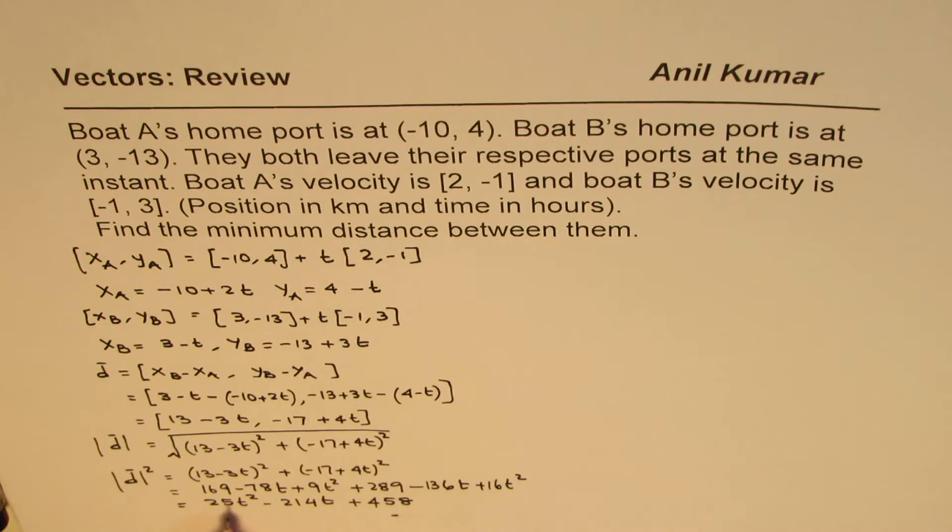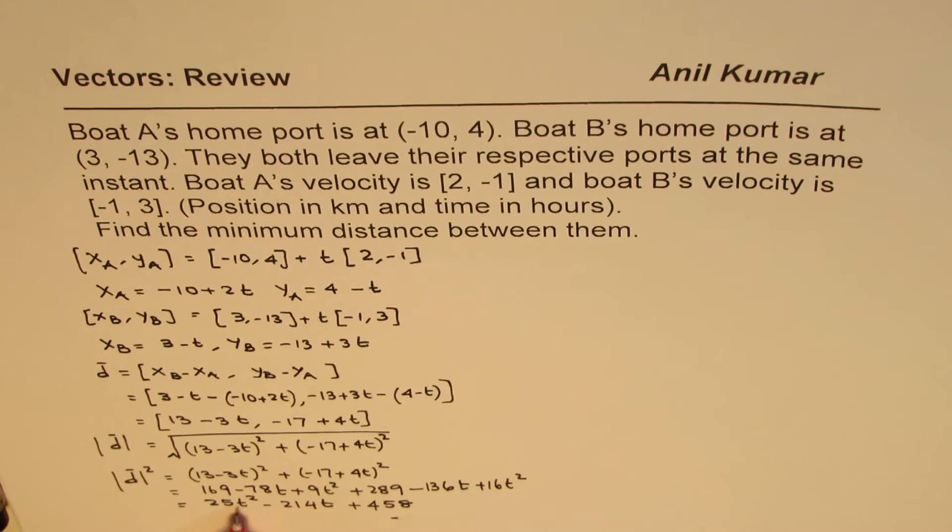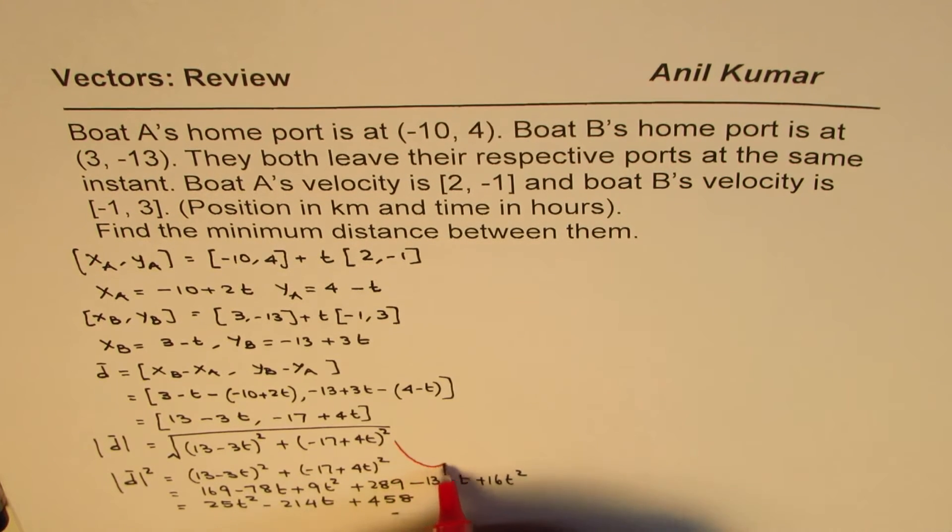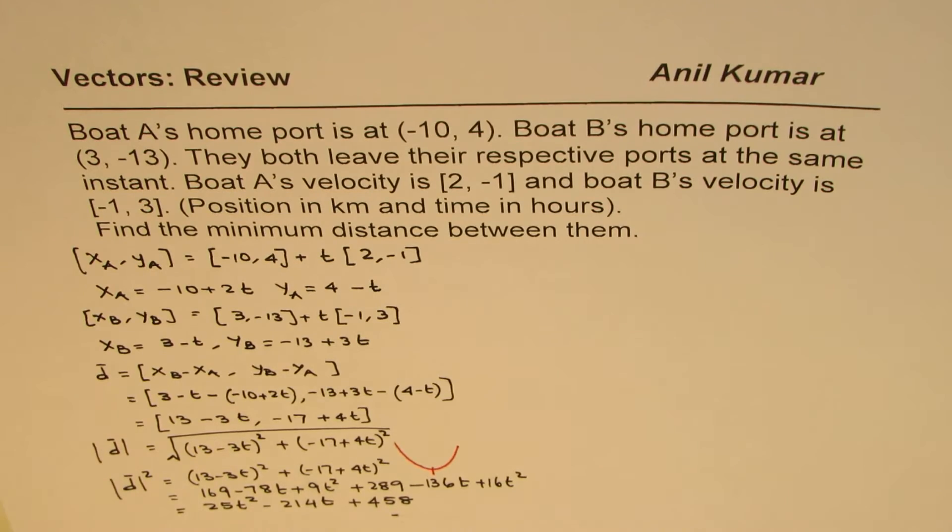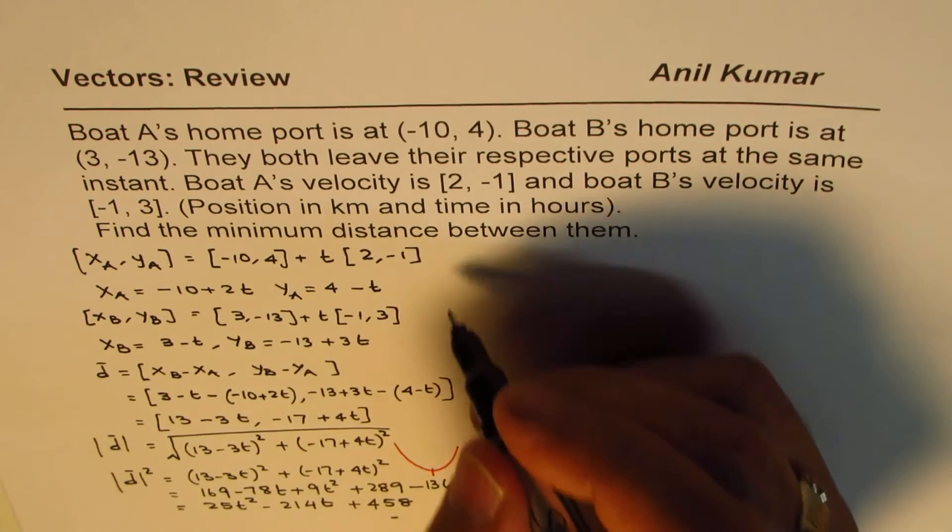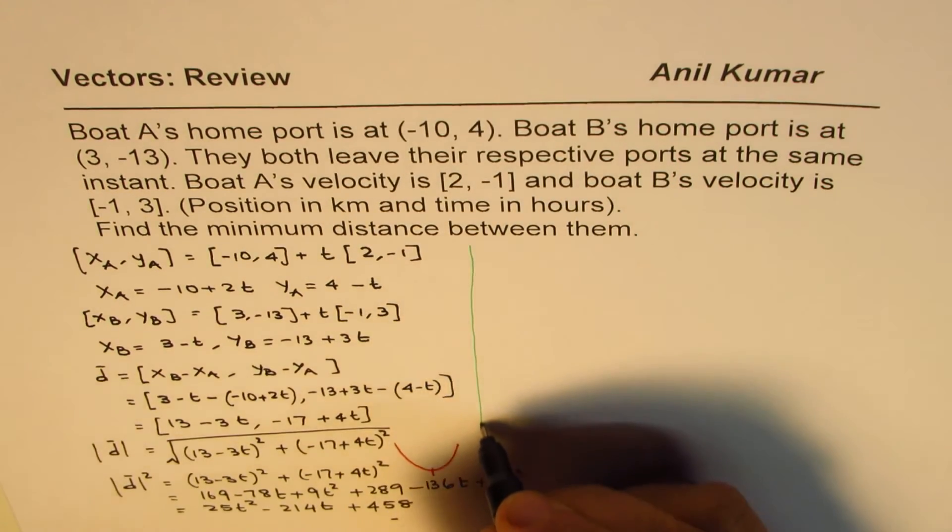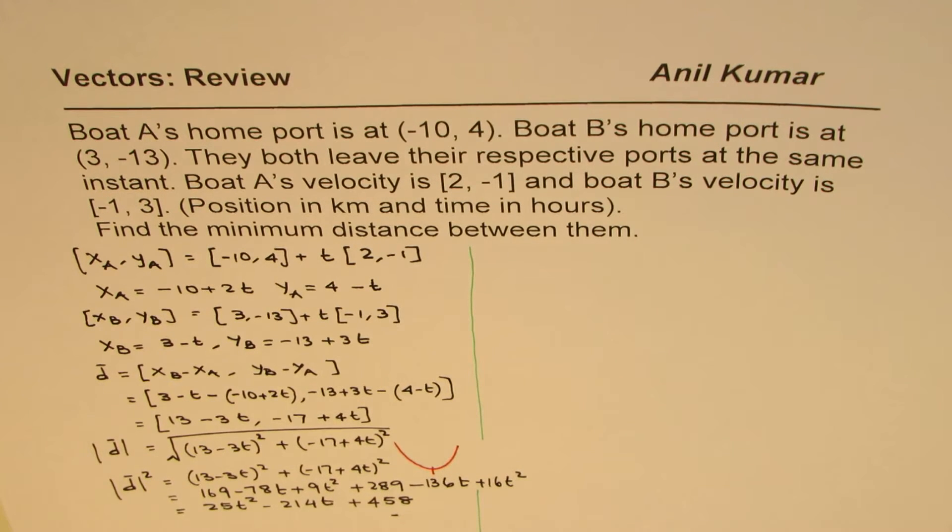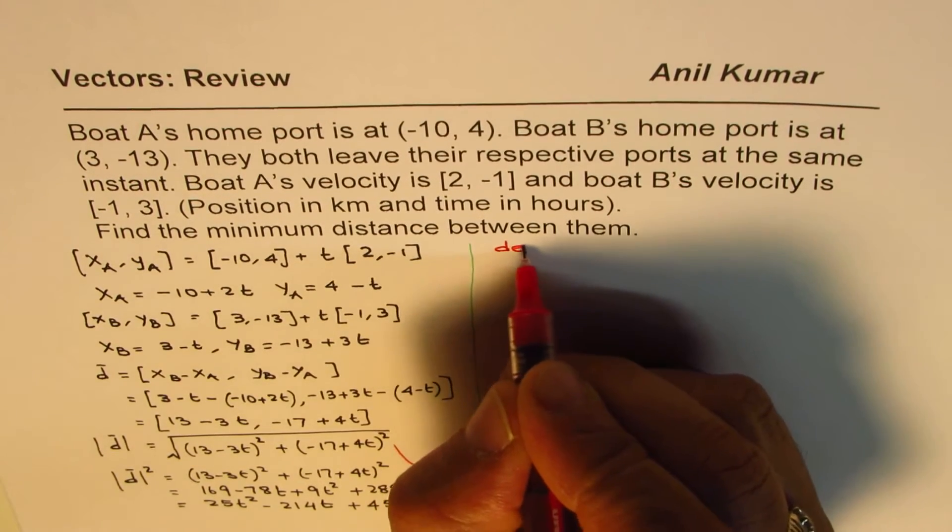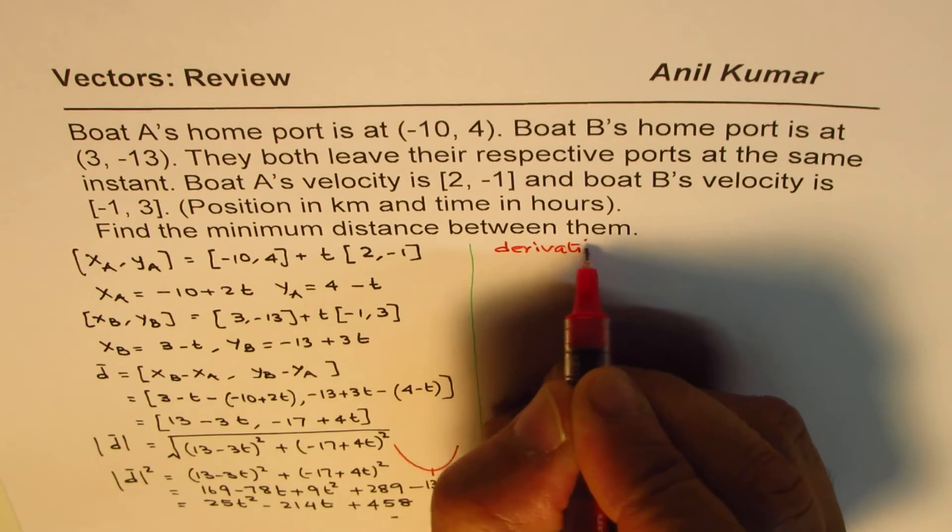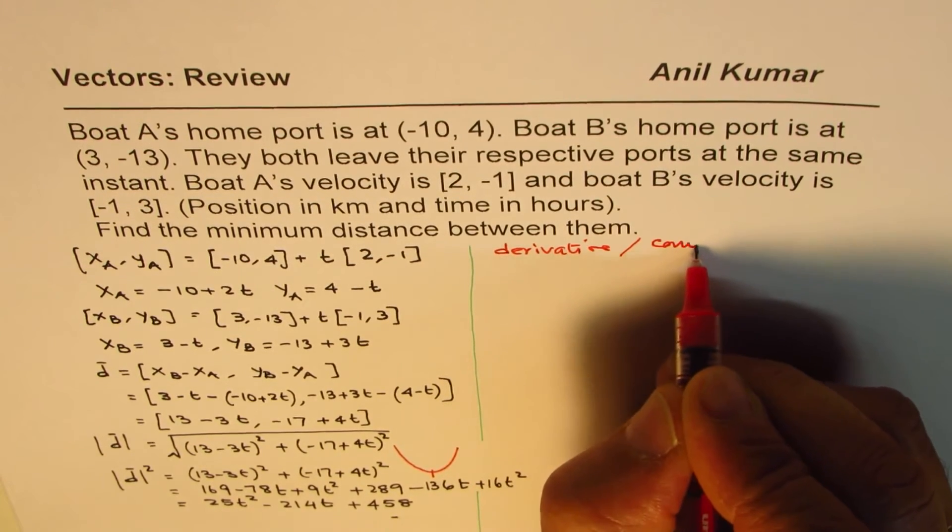As you can see, the square of distance is like a parabola. t², positive coefficient gives you a parabola kind of like this. And that gives vertex as the minimum. So at least we are sure that t value is going to give us minimum in this case. Now how do we find t? A couple of ways. Those of you who have done calculus can do derivatives. And if not, we can do completing squares.